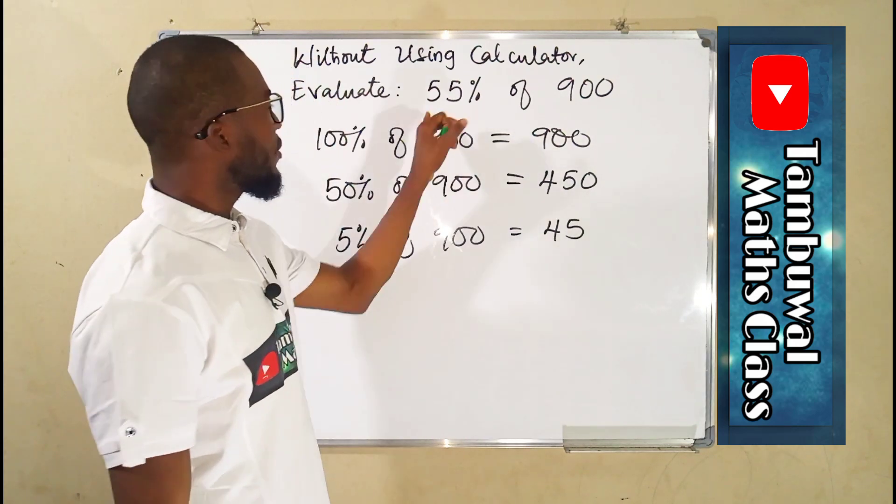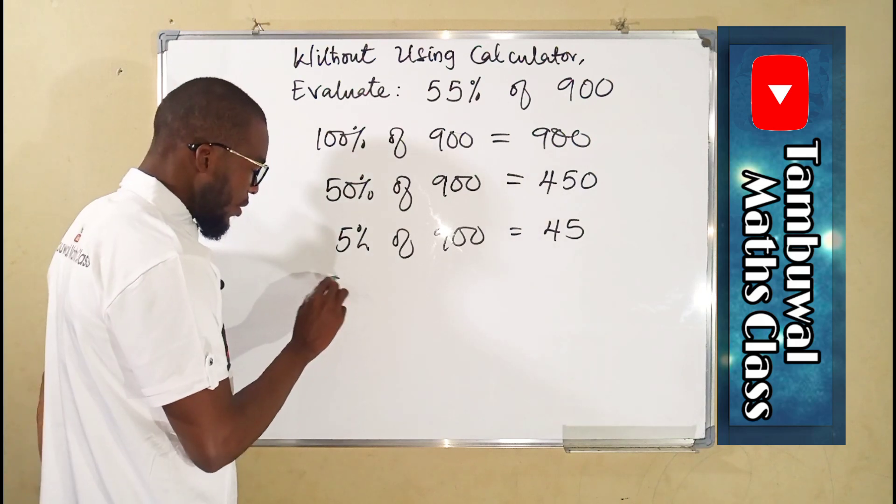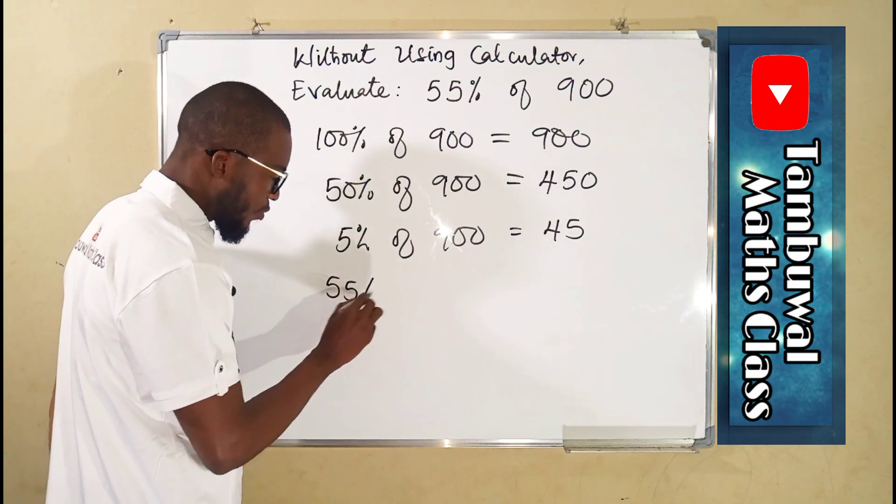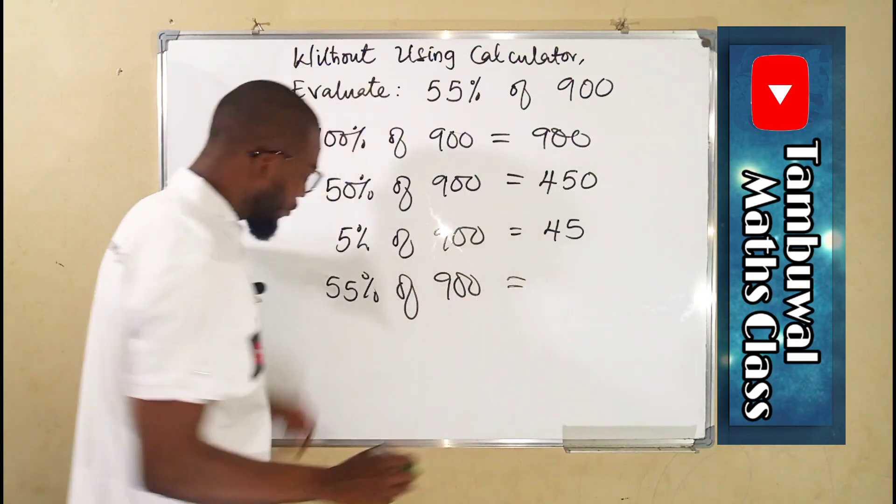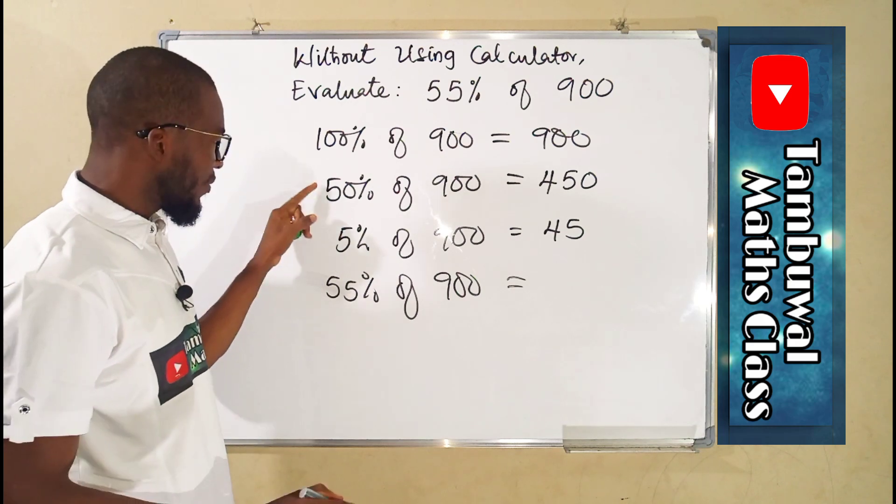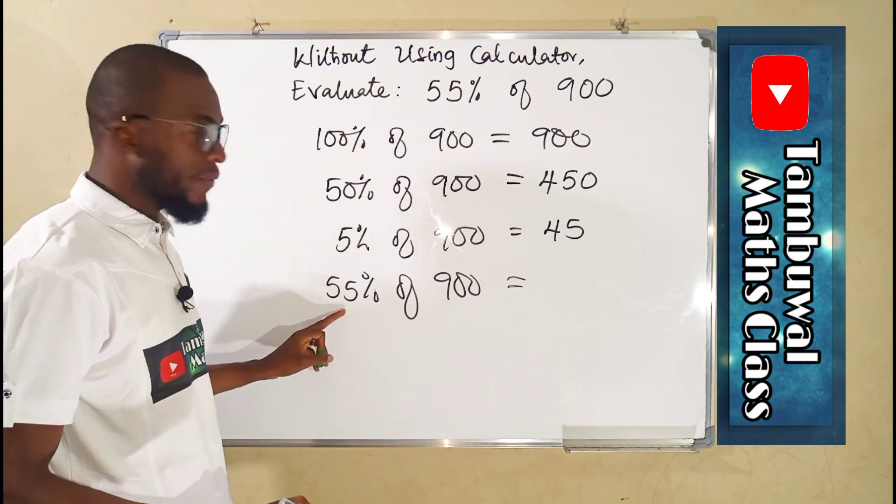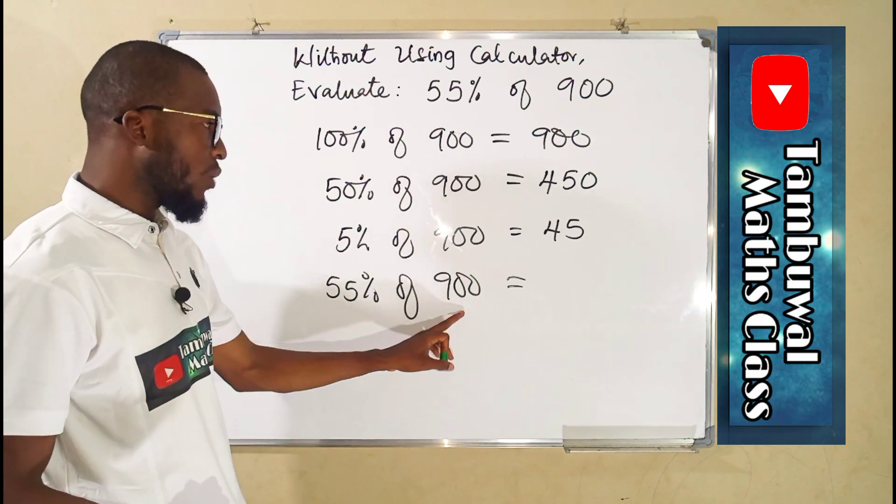But the question says we should find 55%. 55% of 900 is just going to be the sum of 50 and 5, because 50 plus 5 is 55. So to obtain 55% of 900, we can just add 50% and 5% together.